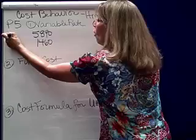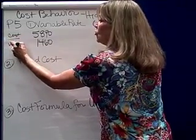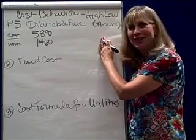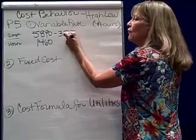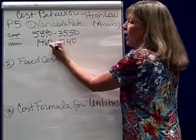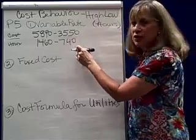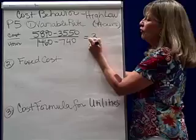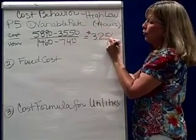So we're looking at change in cost over change in hours. The low month was February, and in February the total utility cost was $3,550 when I worked 740 hours. Finding the change in cost over the change in hours, I find that my variable rate is $3.25 per hour worked.